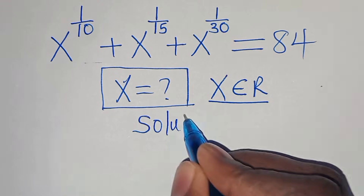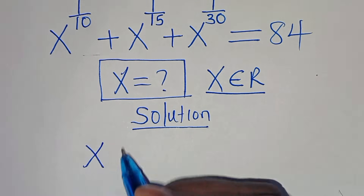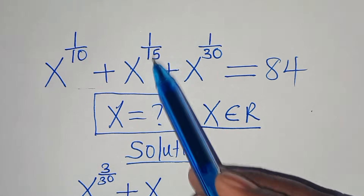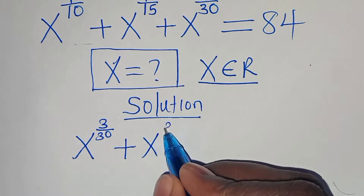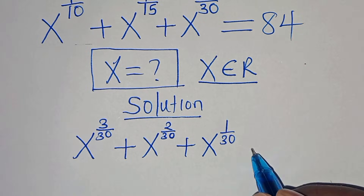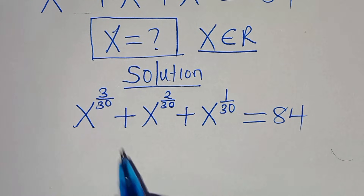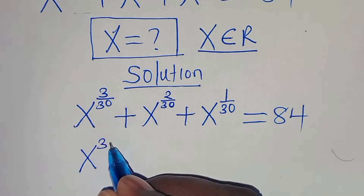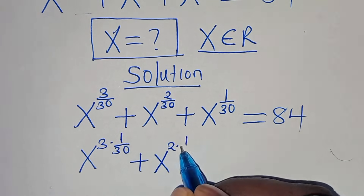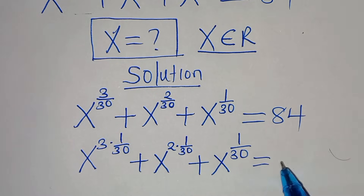The first thing to do is express x to the power of 1 over 10 as x to the power of 3 over 30, then plus x to the power of 1 over 15, which is x to the power of 2 over 30, then plus x to the power of 1 over 30. This is equal to 84.